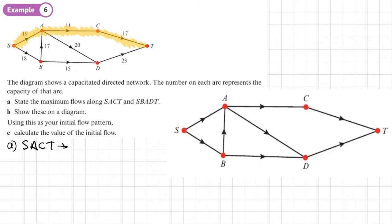So SACT, I can see that the minimum capacity on here is 11, so that's going to be the maximum flow for that route. Then the next route is SBADT. So we'll highlight that. The minimum value, minimum capacity on that route is 17. So that would be the maximum flow on that route.